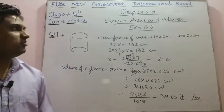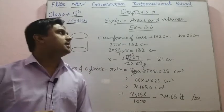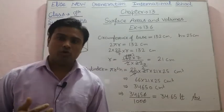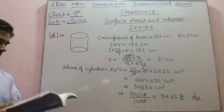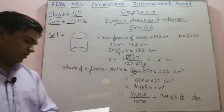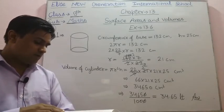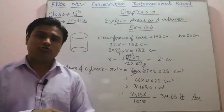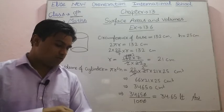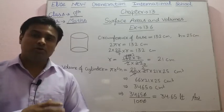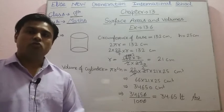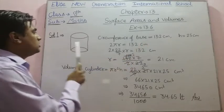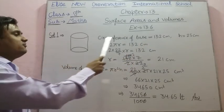Hello students, how are you all? Today we are going to start the next exercise of Chapter 13, that is Surface Area and Volume. In this exercise we will study about the volume of a cylinder. So in Exercise 13.6, see Question number 1. In Question 1 we have: the circumference of the base of a cylindrical vessel is 132 centimeter and its height is 25 centimeter.